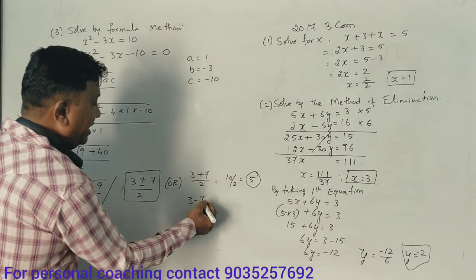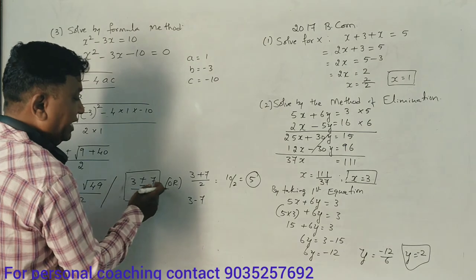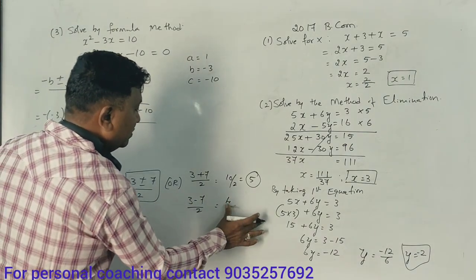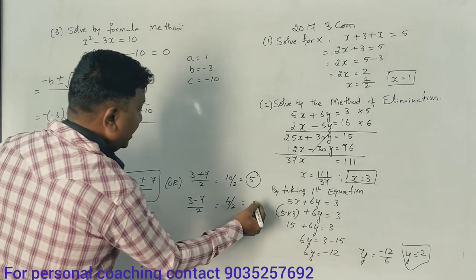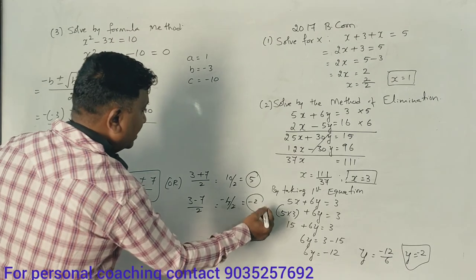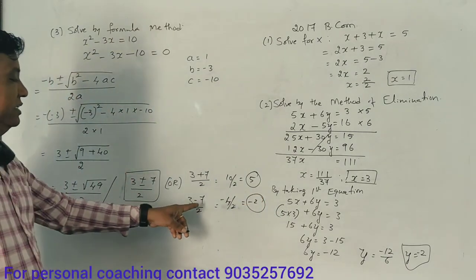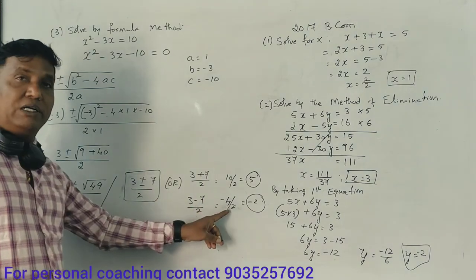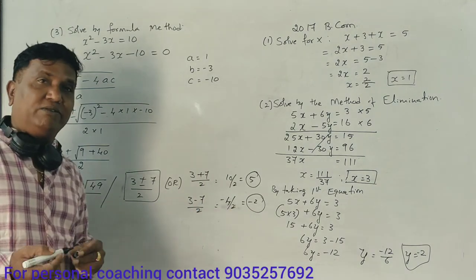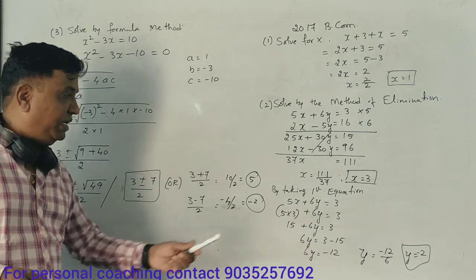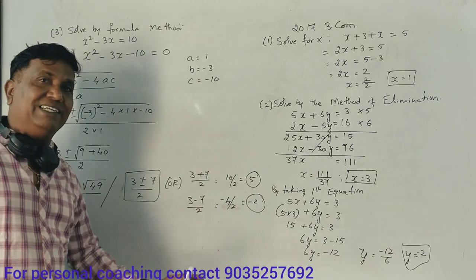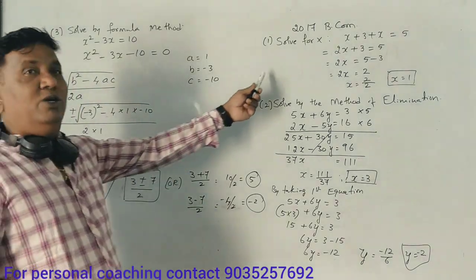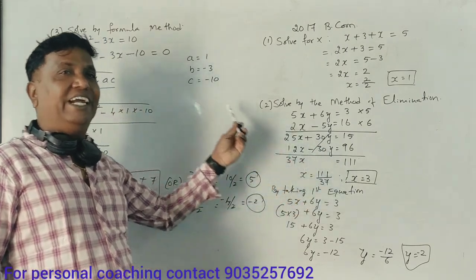So x equals 3 plus 7 divided by 2, which is 10 divided by 2 equals 5. And x equals 3 minus 7 divided by 2, which is minus 4 divided by 2 equals minus 2. The two solutions are x equals 5 and x equals minus 2.